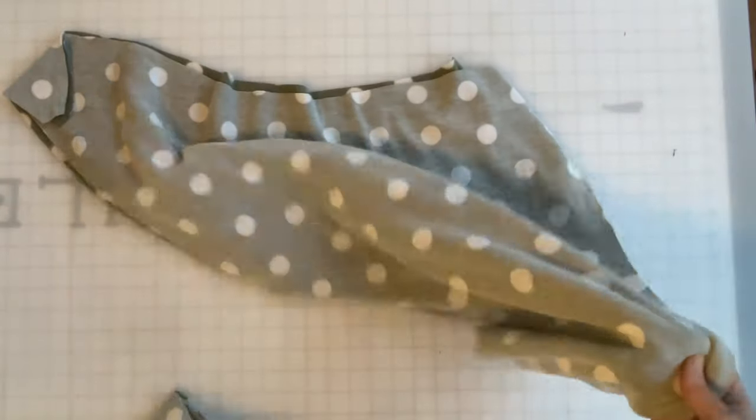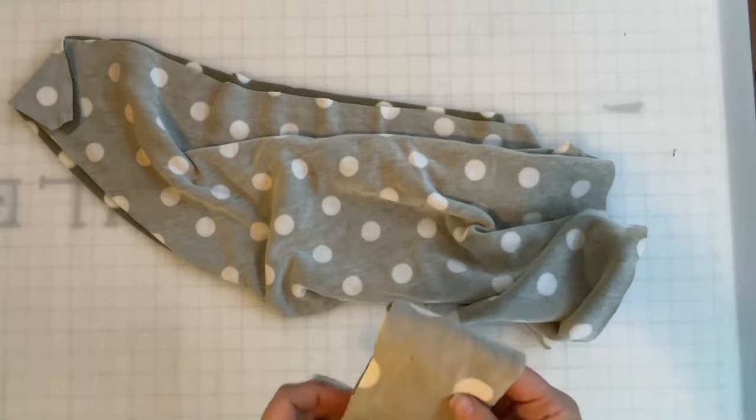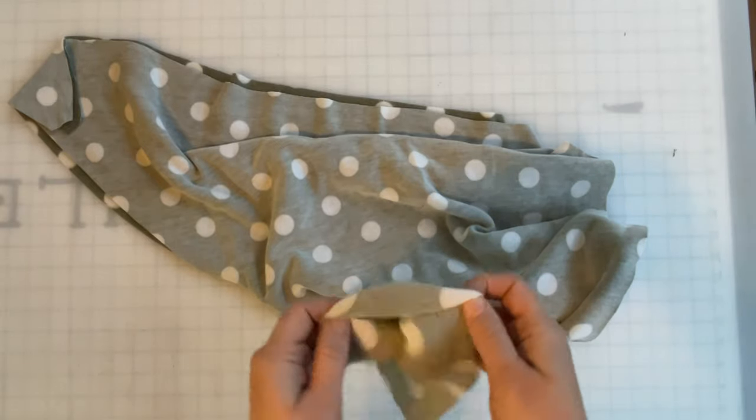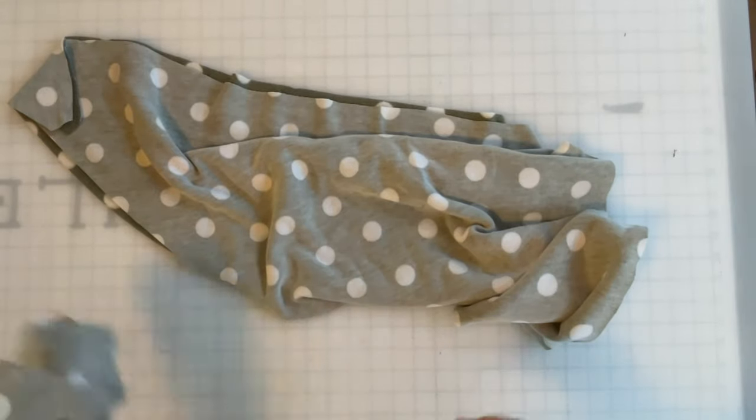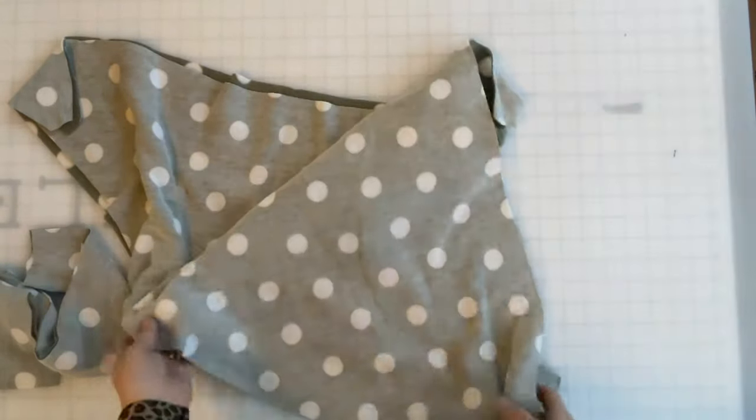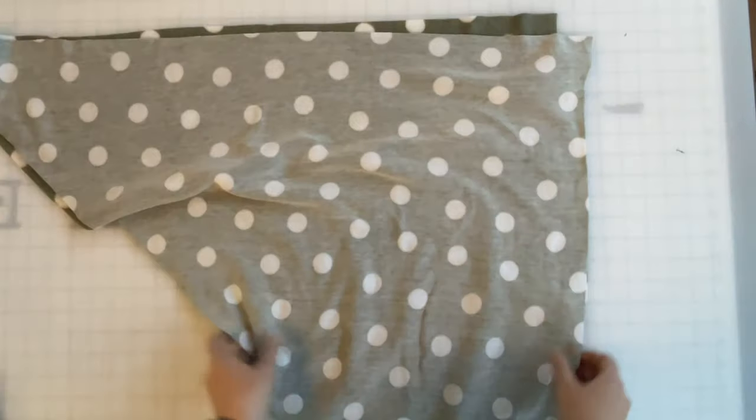You're going to need two of the shawl pieces and two of the strap pieces. That's it, it's pretty fast to sew, so let's get moving. First, we're going to lay out the shawl pieces.